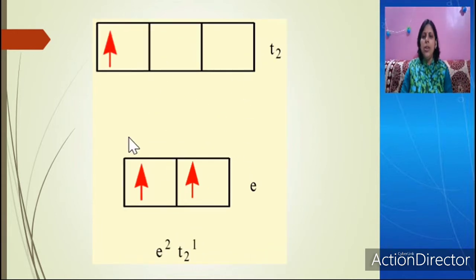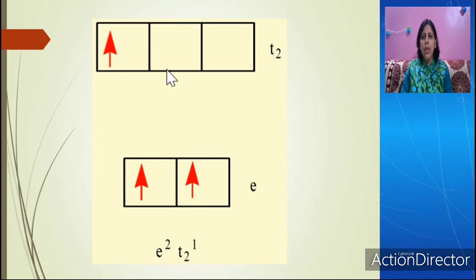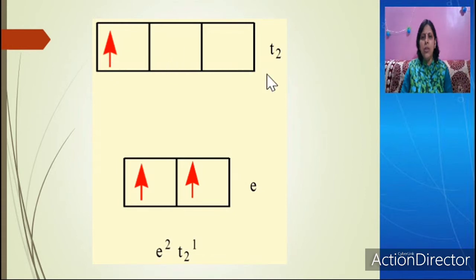This configuration is D3. Since these are weak field complexes, one electron fills here, then here, and the third electron fills in the t2 set. Because this is a high spin complex, the energy difference between t2 and e is very low, so the third electron goes to the t2 set and the electronic configuration becomes E2, T2(1) — two electrons in e and one electron in t2.